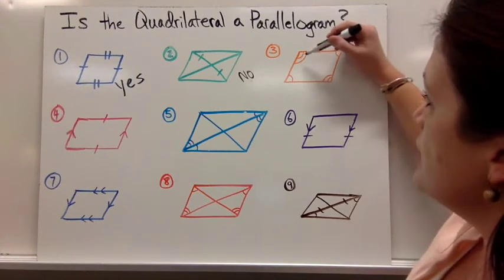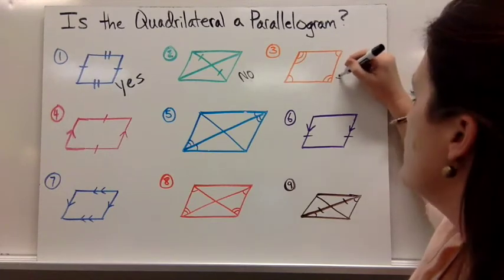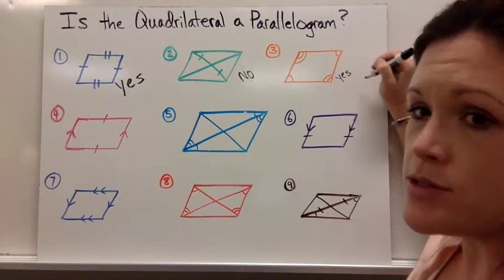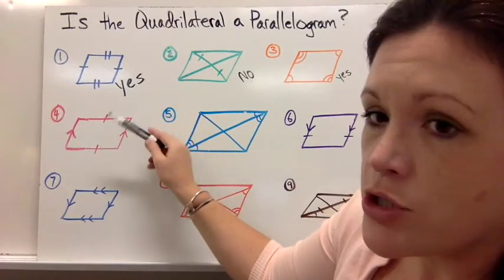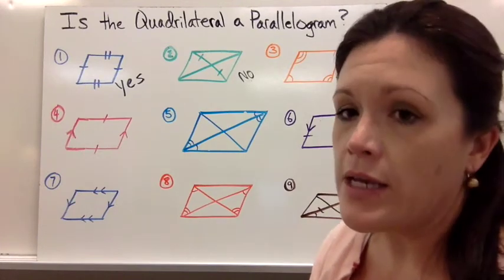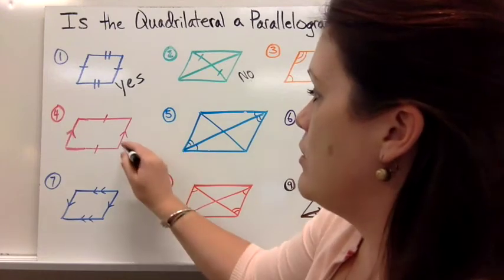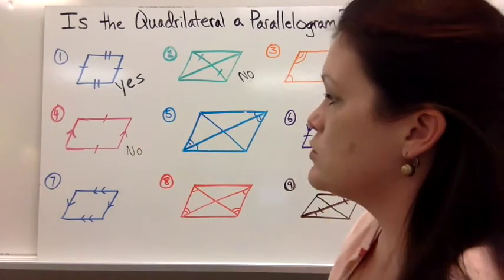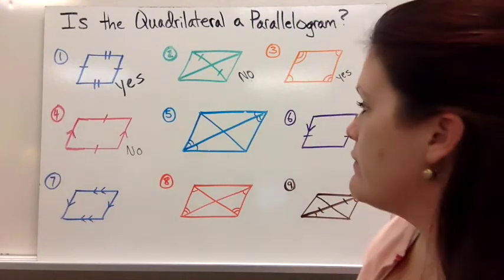For number three, both pairs of opposite angles are indicated to be congruent, and that is one of our five ways. So that's a definite yes. For number four, you have one pair of opposite sides congruent and another pair is parallel. The rule for proving it would be that one pair is both congruent and parallel. So this is a no, because one pair congruent and another pair parallel is not enough information.